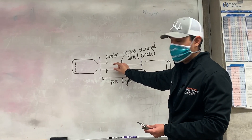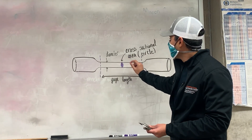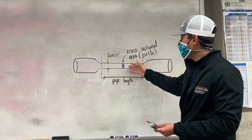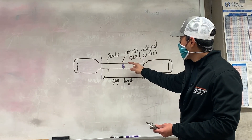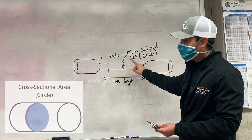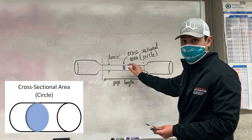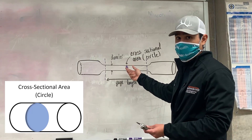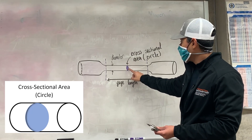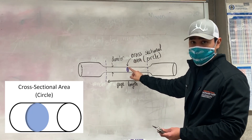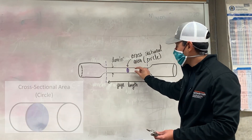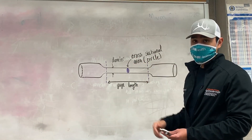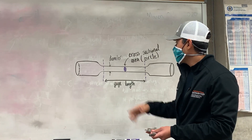The second measurement will be your diameter — the diameter of the thinner portion where the material was removed. This is not a measurement but a calculation: based on your diameter, figure out the cross-sectional area of the sample where the material will be failing. That cross-sectional area will be of a circle within the thinner portion where the material was removed.